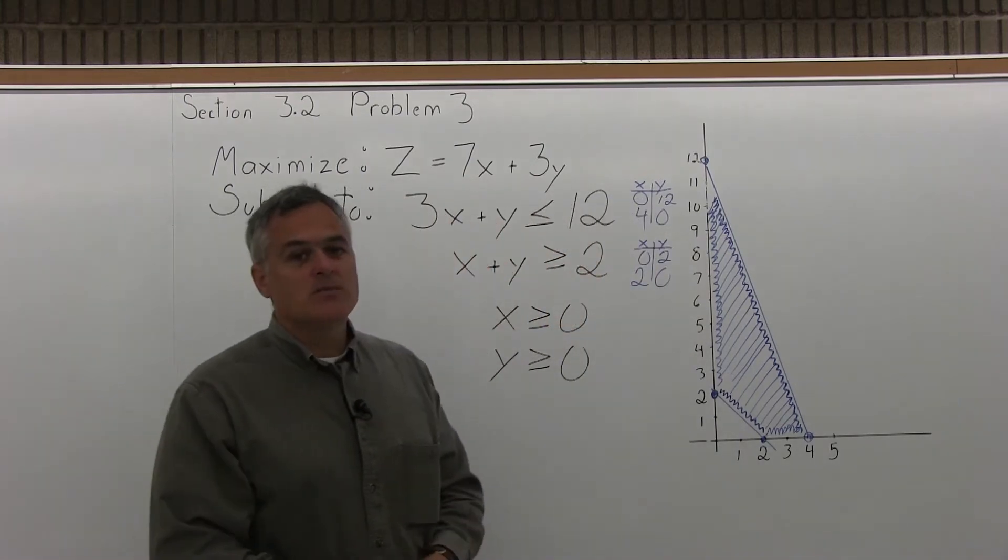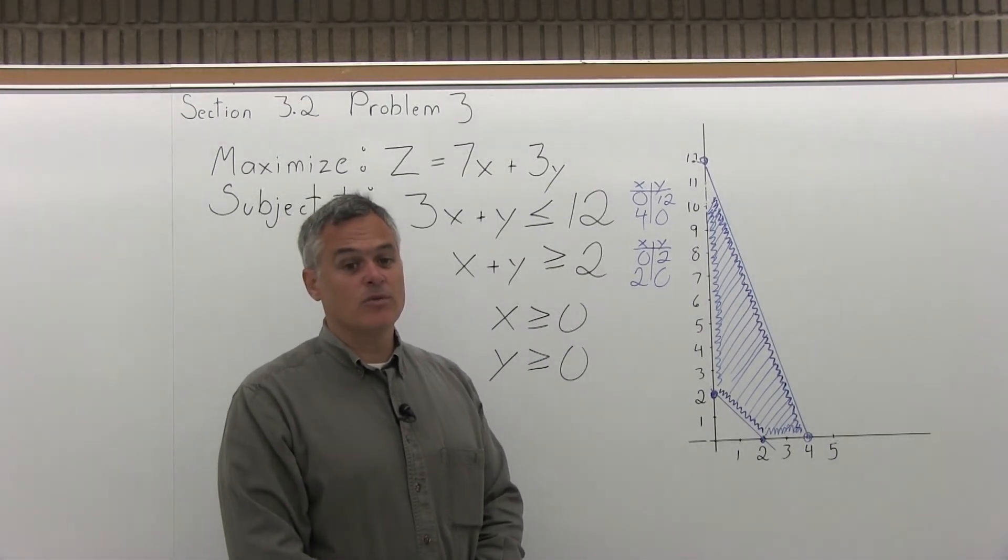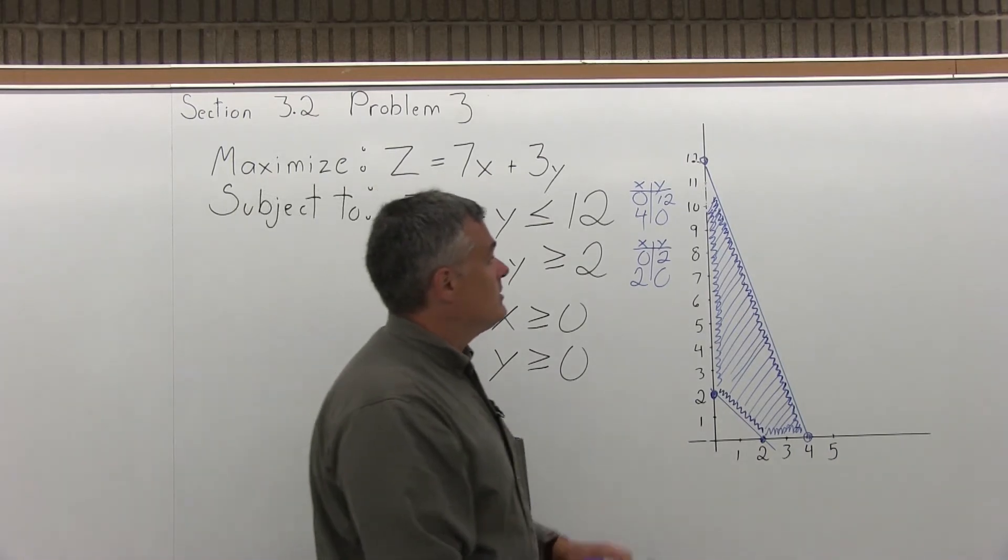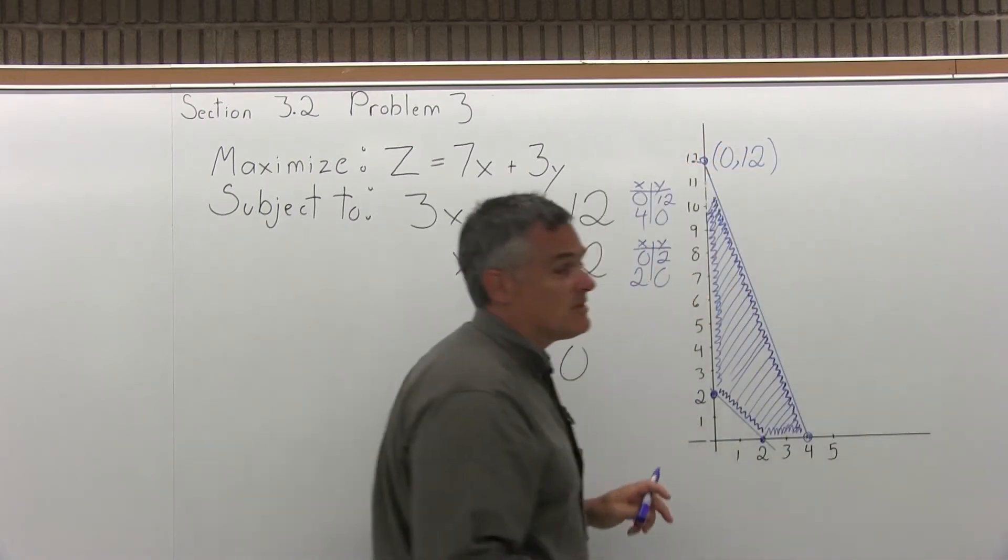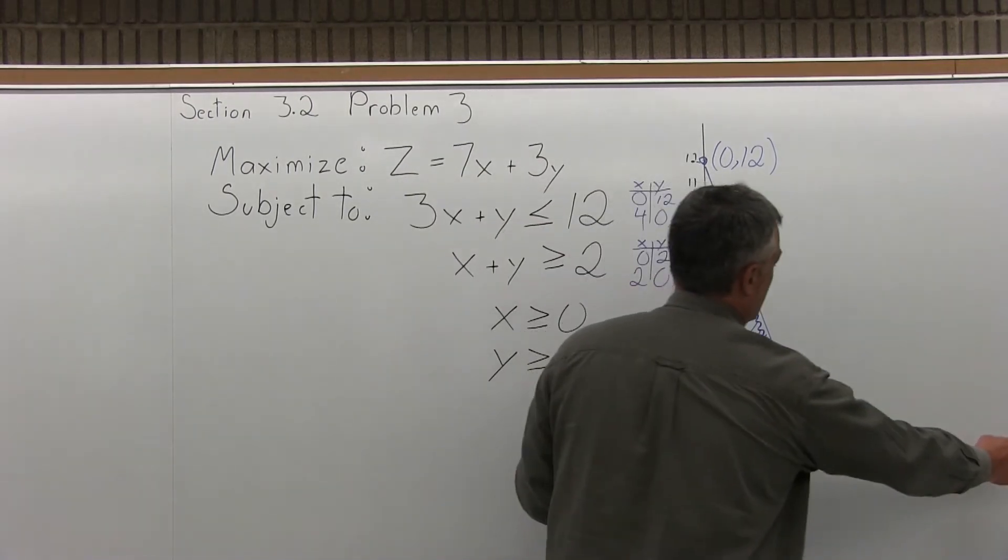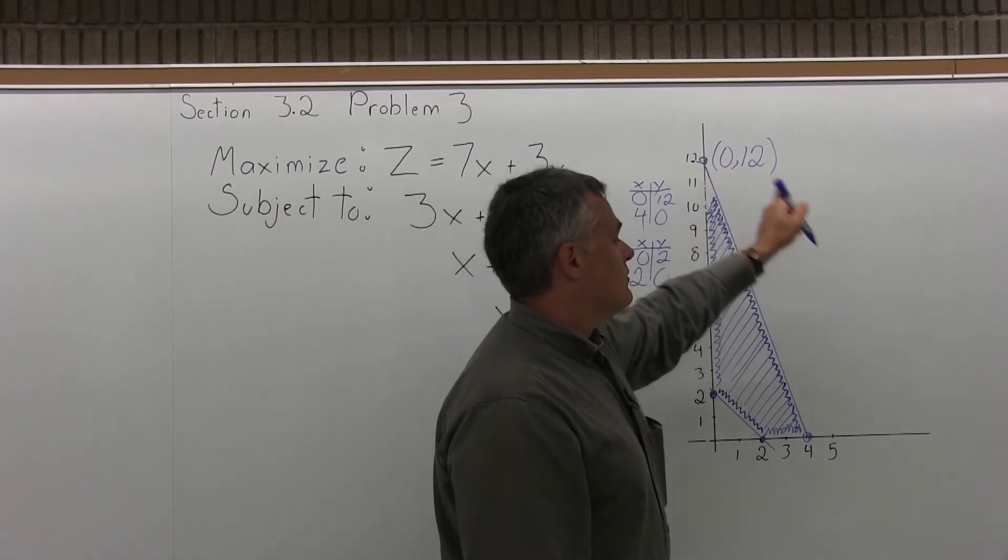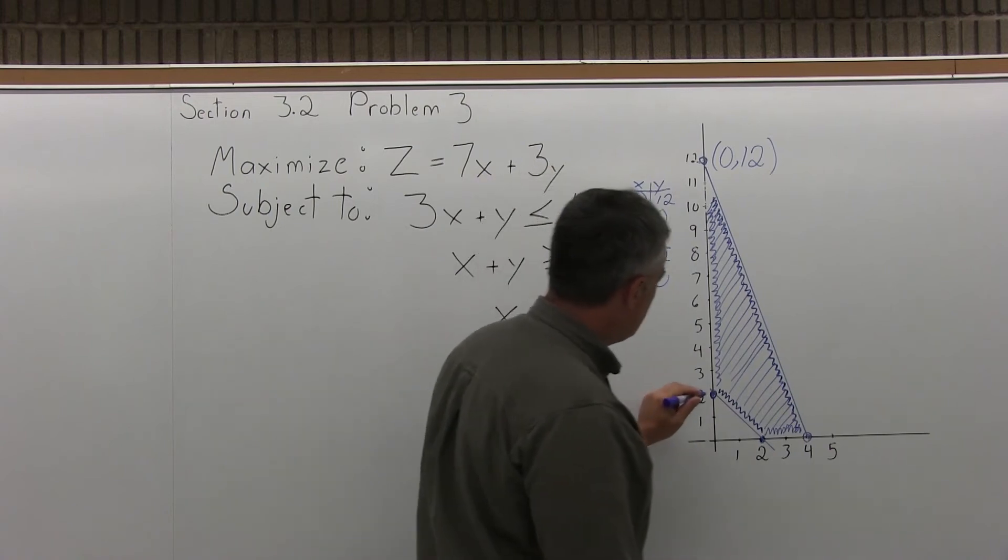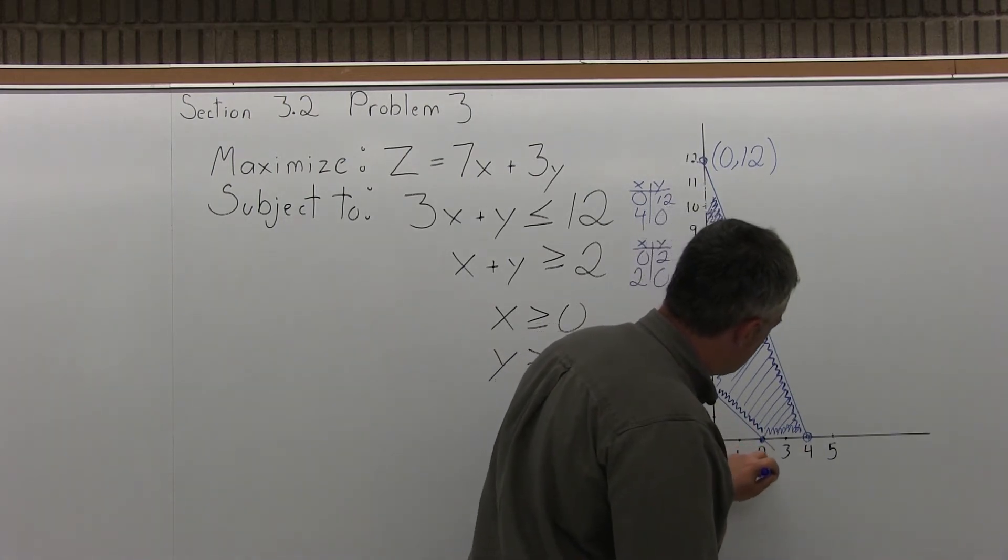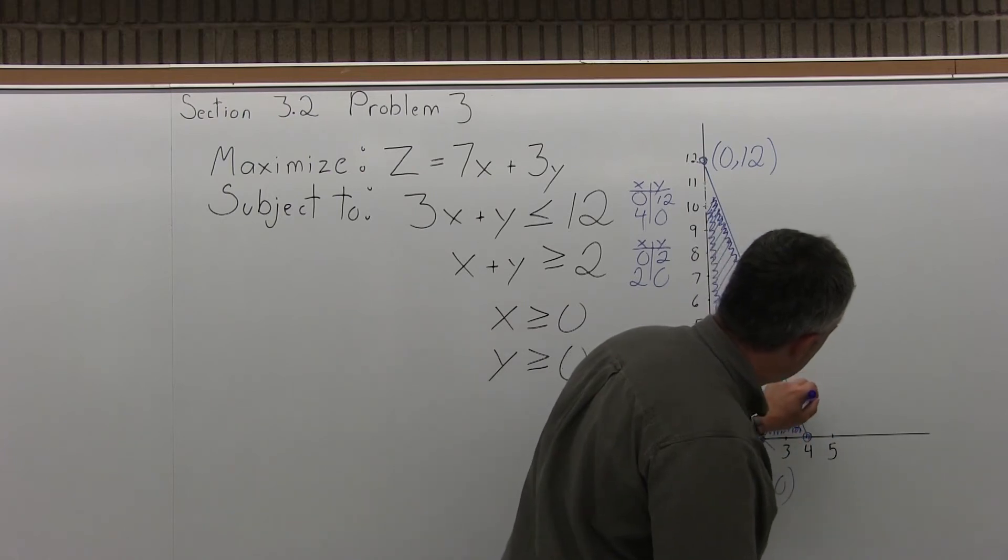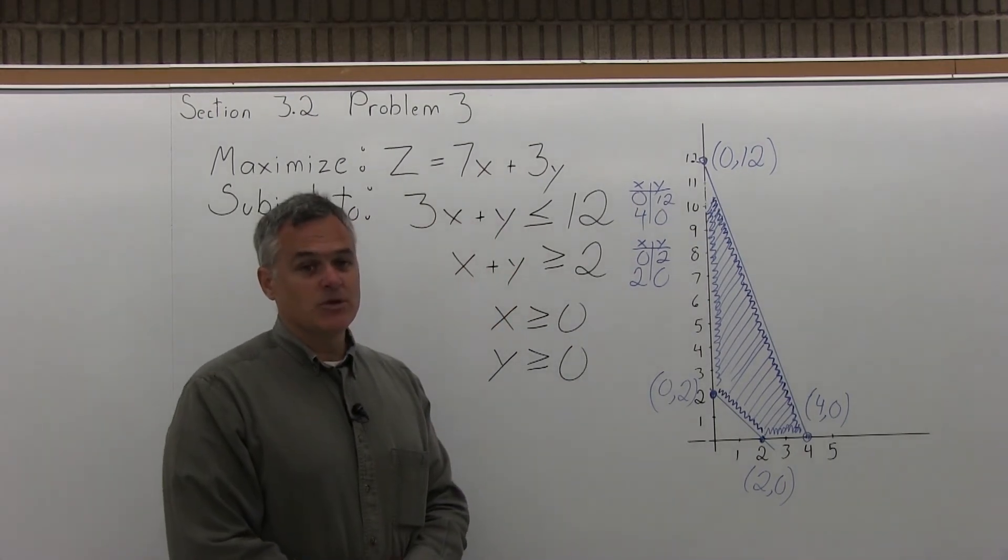So solving this problem is a four-part process. Part one is graph the feasible region. We have graphed the feasible region. Step two is label the corner points. Now, the corner points are easy enough to label. The top corner point is 0, 12. Now be careful in the order in which you list the 0 and the 12. This is 0, 12, not 12, 0. It makes a big difference. 12, 0 would be way over on the x-axis way off to the right, which is not the point we have. We want 0, 12, not 12, 0. There's a difference, so pay attention. This one is 0, 2. The next corner point coming around is 2, 0. And the last corner point is 4, 0, over 4, up 0. So now we have all the corner points listed. That's step two, label your corner points.